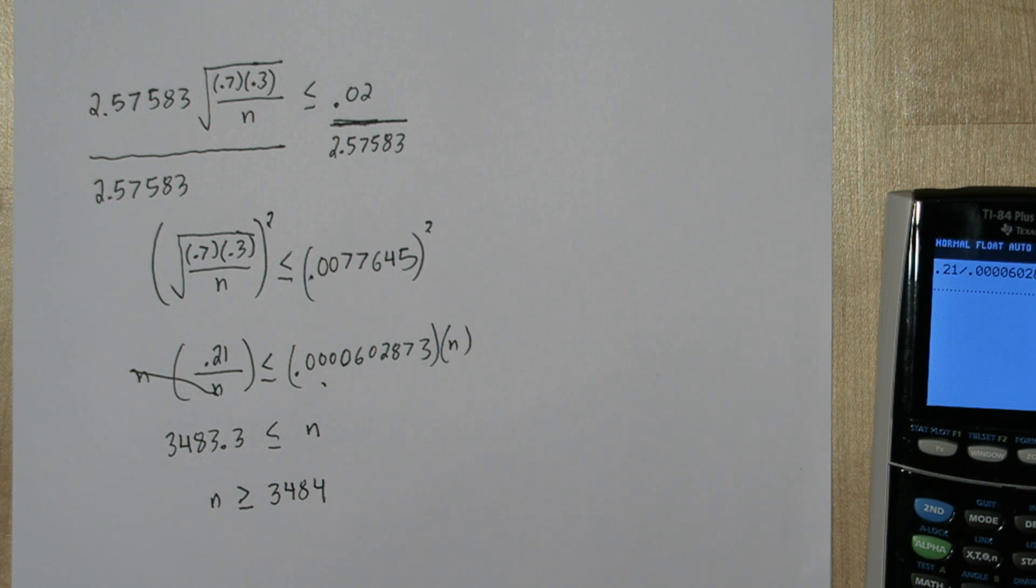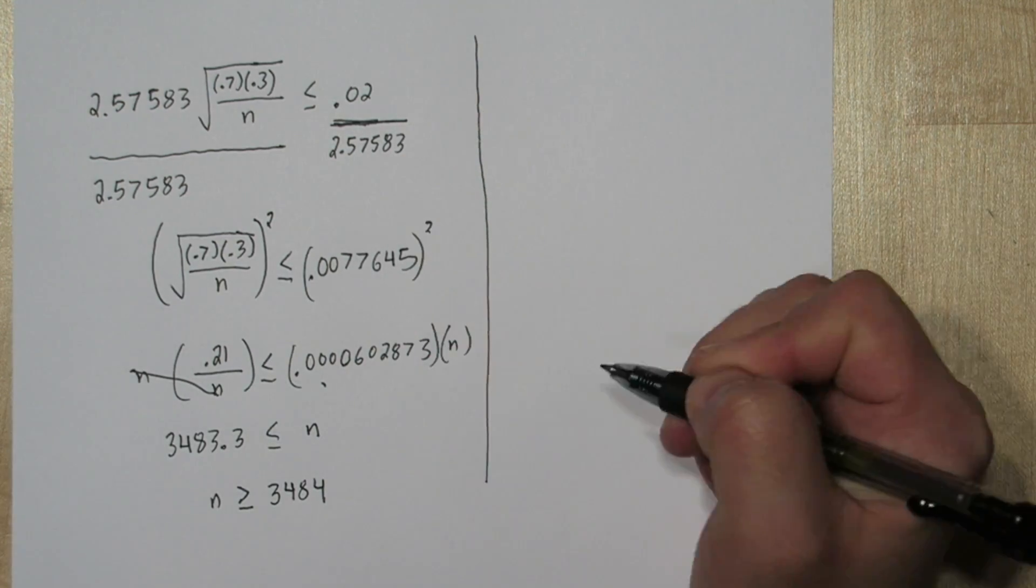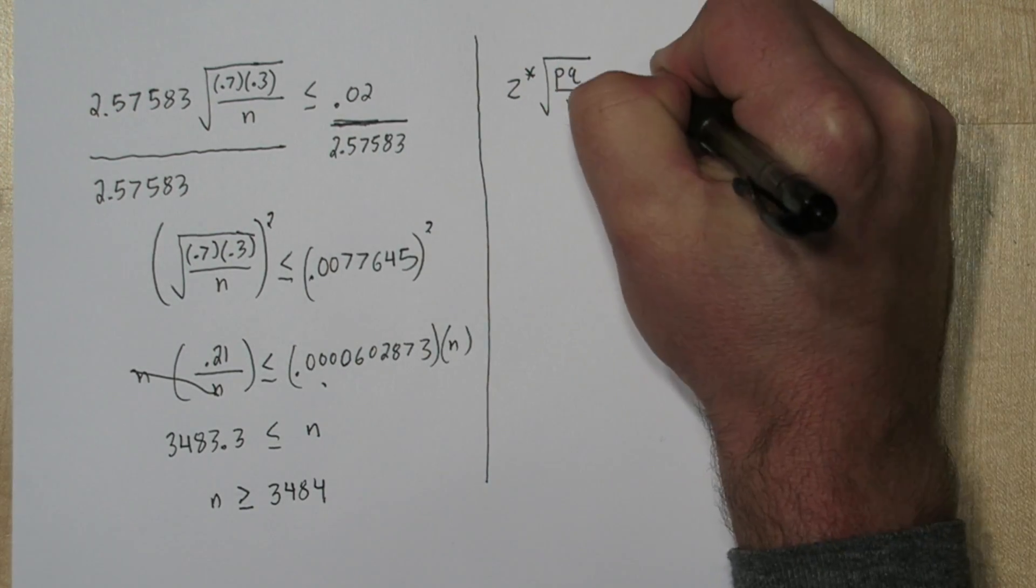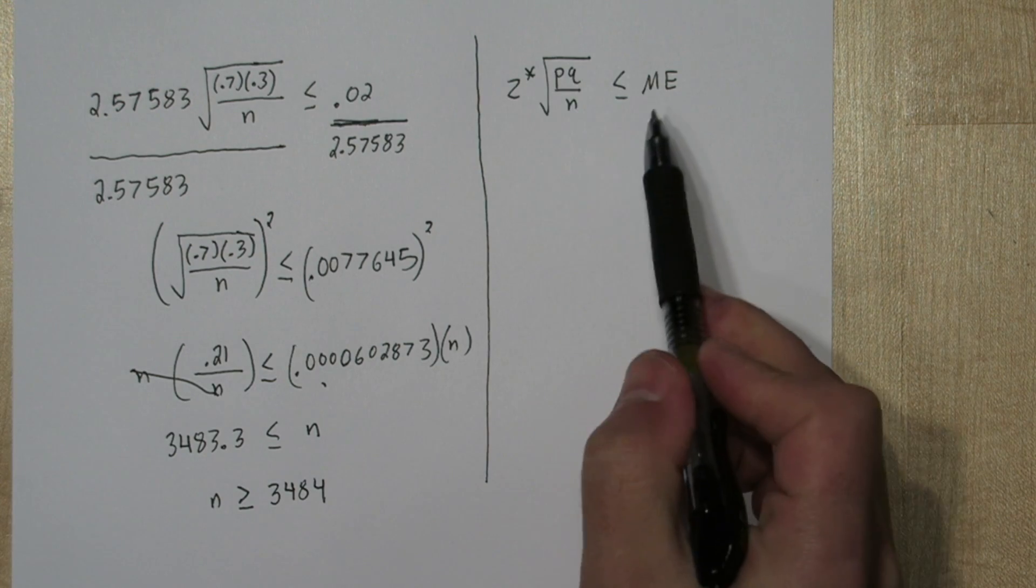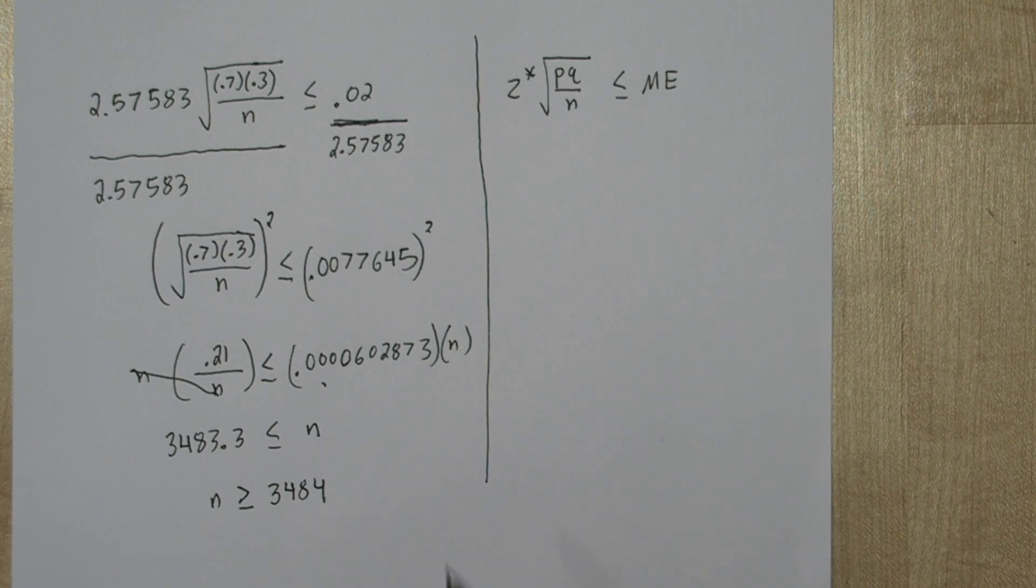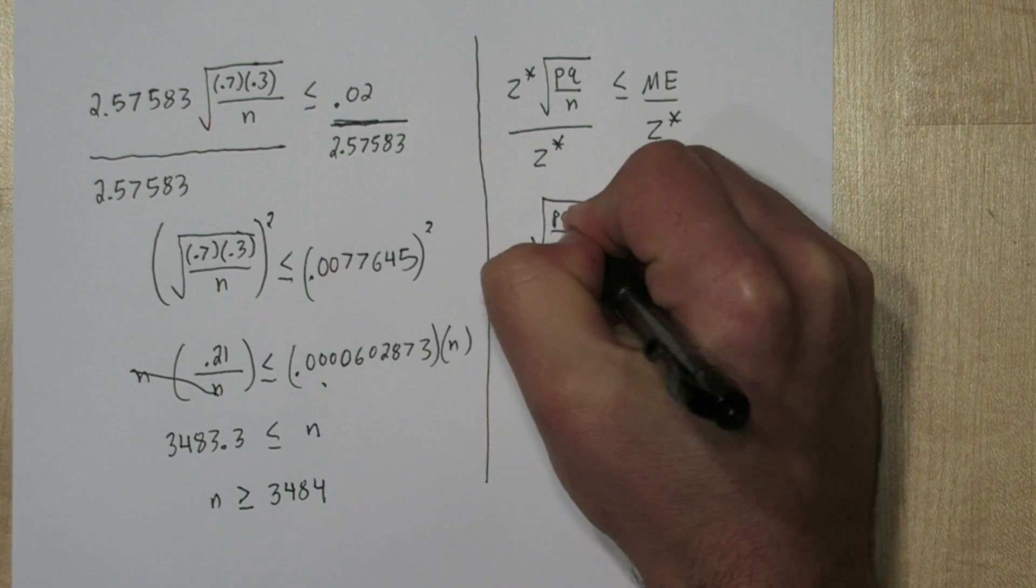Now if we look at the formula, we can actually derive a new one for solving for sample size. So we're just going to do the same steps to our formula to solve for n. So the first thing we'll do is divide by z star.